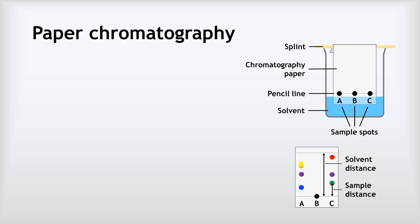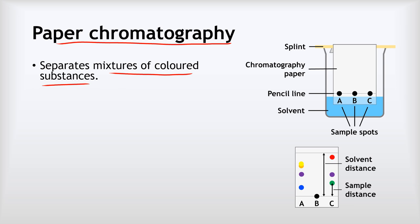Next up is paper chromatography, which is used for separating mixtures of colored substances. We have a solvent which we call the mobile phase and some paper which we call the stationary phase.